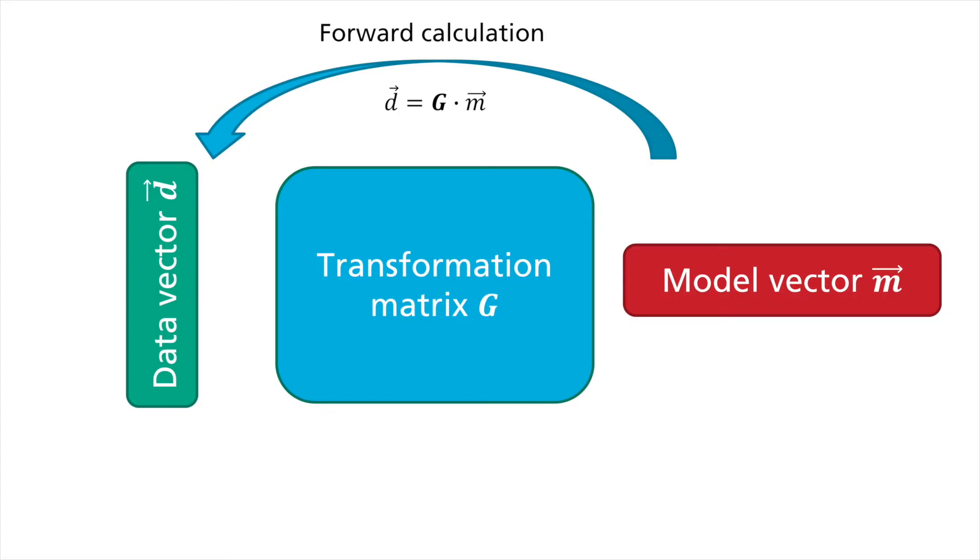This allows the forward calculation of D from M, but not the other way around. Now the mathematical key comes into play. In order to obtain it, we need to invert G. But this is only possible when the data and model vector are equally long. That means G is a square and the data is free of measurement errors. In practice, however, both are generally not the case.